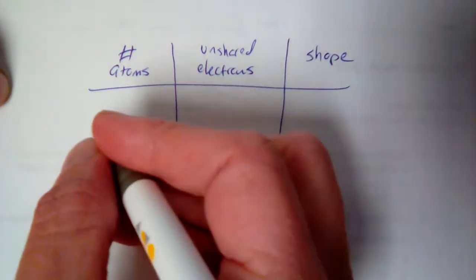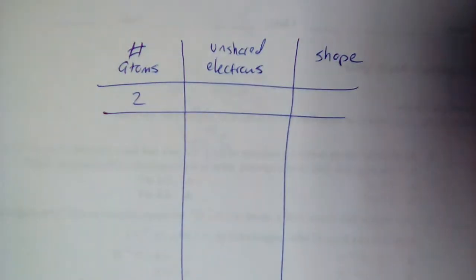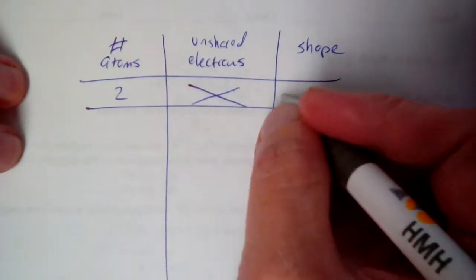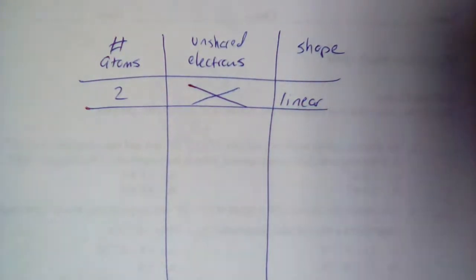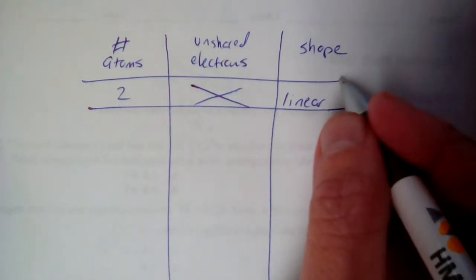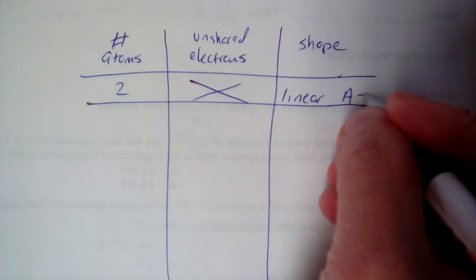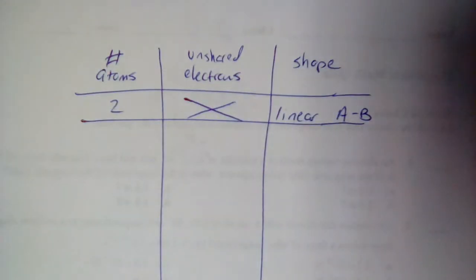The simplest molecules are two-atom molecules. Whenever there's a two-atom molecule, we don't need to worry about unshared electrons — there's only one shape it can be, and that is linear. No matter how you orient it, there's only one way to put them together: in a straight line. The only thing to worry about is whether the bond is single, double, or triple, and that's where drawing Lewis structures comes in handy.